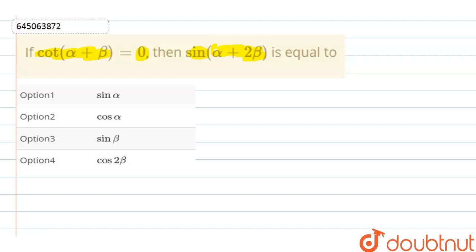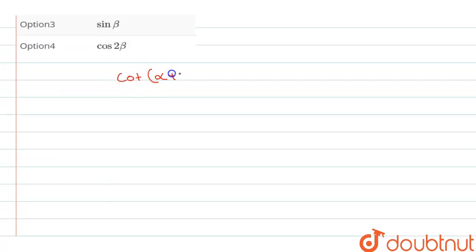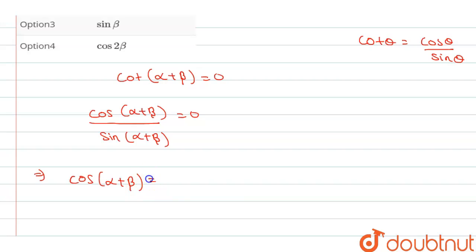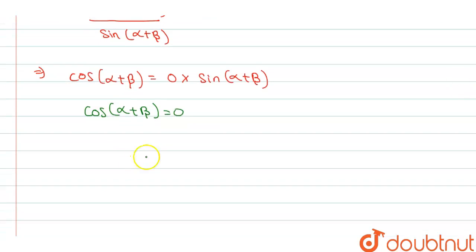We have given that cot(α + β) = 0. We know that cot θ = cos θ / sin θ. So we can write cos(α + β) / sin(α + β) = 0, which means cos(α + β) = 0. We know that cos θ = 0 only when α + β = 90°.